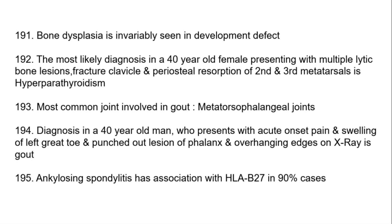Most common joint involved in gout is the metatarsophalangeal joint. Diagnosis in a 40-year-old man presenting with acute onset pain and swelling of the left great toe and punchout lesions of phalanx with overhanging edges on X-ray is gout. Ankylosing spondylitis has an association with HLA-B27 in 90% of cases.